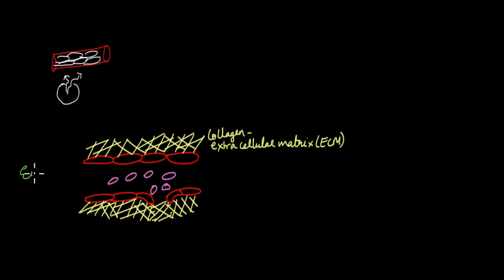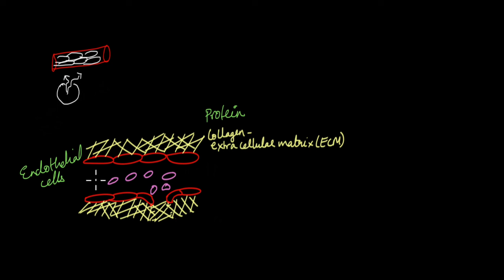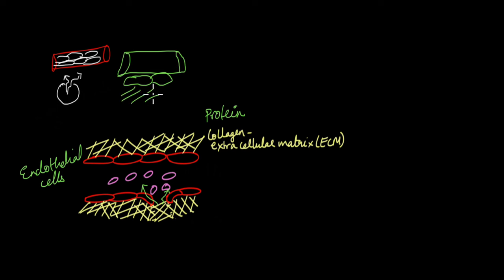Say these are the endothelial cells. You have something known as the extracellular matrix located outside the cells. The extracellular matrix is made up of a protein known as collagen, which offers support and structure to the cells and tissues. When the endothelial cells break open, certain chemicals are released into the bloodstream, and the platelets also come in contact with the collagen.